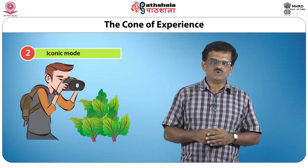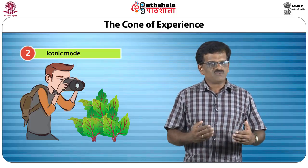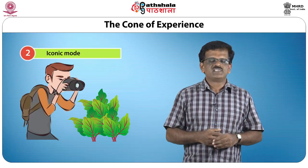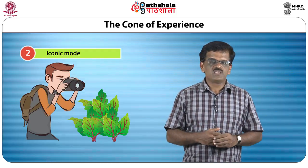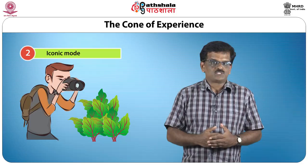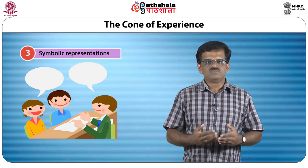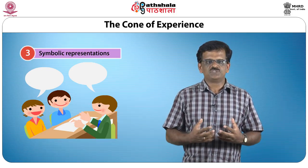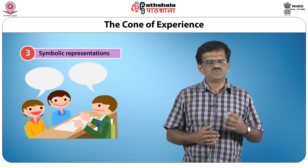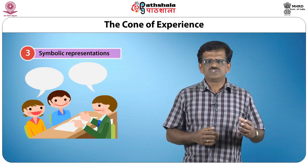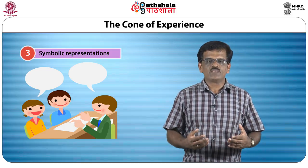In the iconic mode, information is stored in the brain in the form of an image. Using a photograph of a very rare plant species can help the learner examine it and match the image with their mental image to identify the species. The third mode is symbolic representation, which involves storing information in a more abstract form requiring high-level cognitive processing. For example, language is a symbolic representation requiring proficiency to understand and speak.